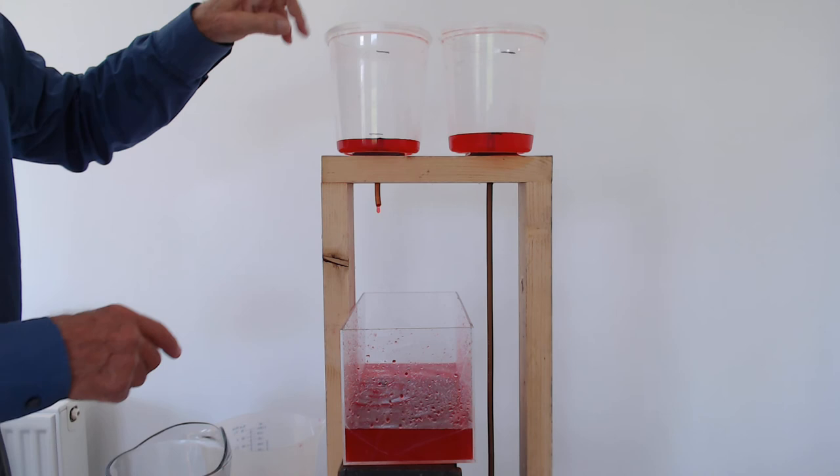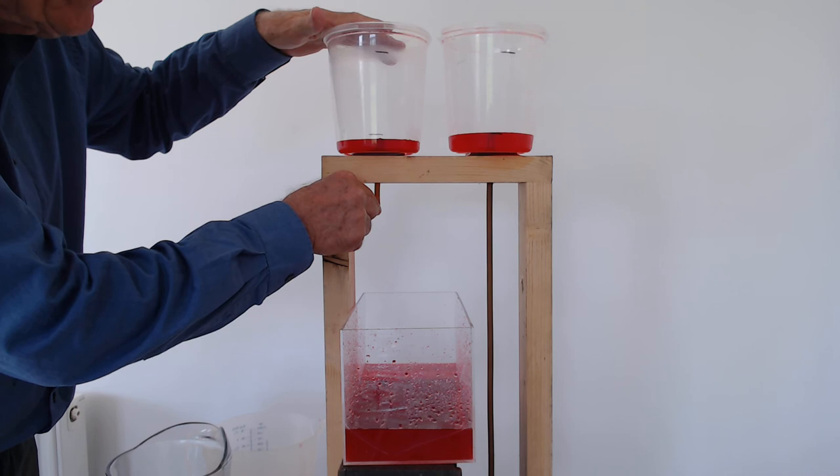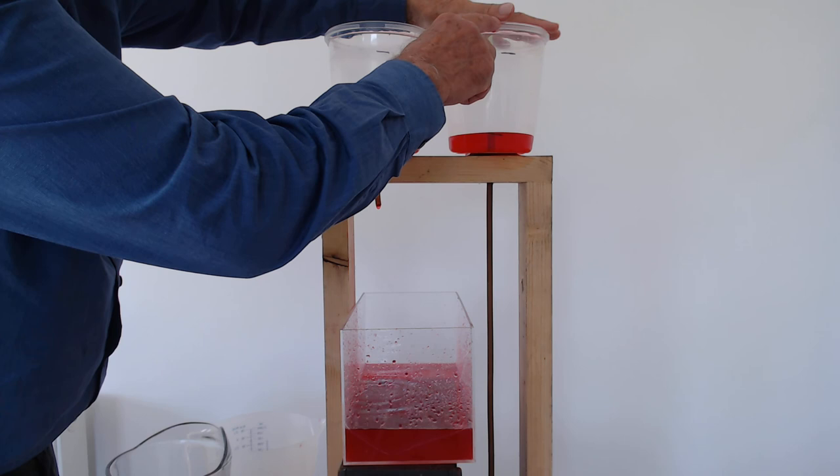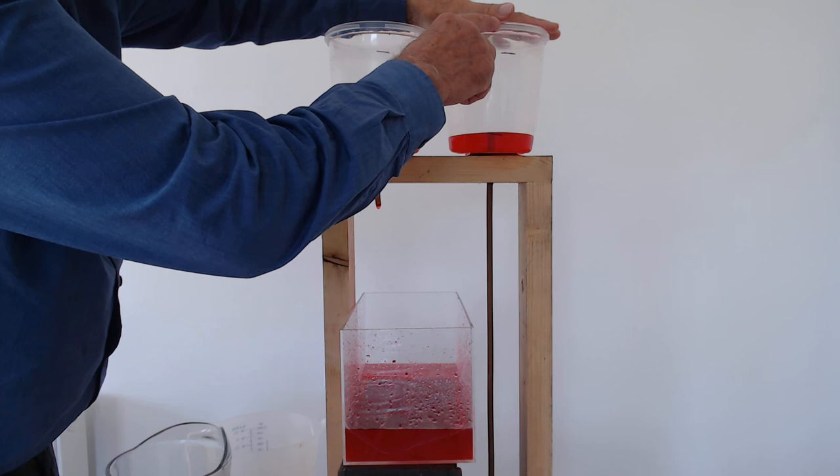This one had a head of water that was from the top of the beaker to the end of this little bit of rubber tubing. But this one had a head of water that was equal to the distance between the top of the beaker and the lower end of the rubber tubing which as I said was over a meter away right down towards the floor.